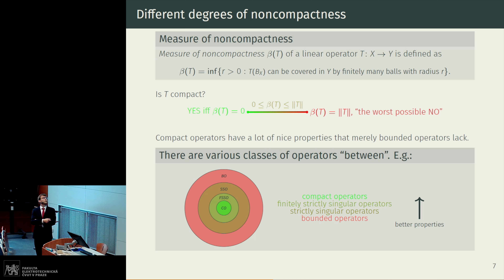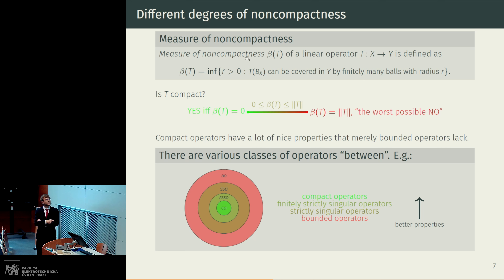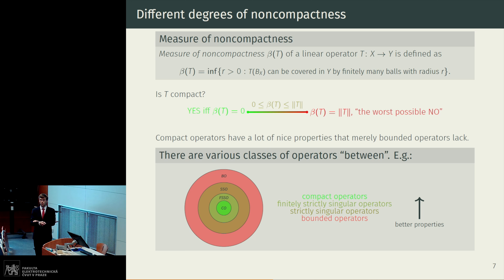There are several ways of measuring the severity of non-compactness of a Sobolev embedding. One of them is sort of geometrical: the so-called measure of non-compactness, sometimes attributed to Kuratowski — the same Kuratowski you might know for his characterization of planar graphs. This measure of non-compactness is particularly useful in fixed-point theory, which is sometimes used for proving existence of solutions to nonlinear problems. It gives us a certain scale measuring severity of non-compactness. Our embedding is compact if and only if the measure of non-compactness is zero, and the worst possible case is when the measure of non-compactness coincides with the norm of the operator.